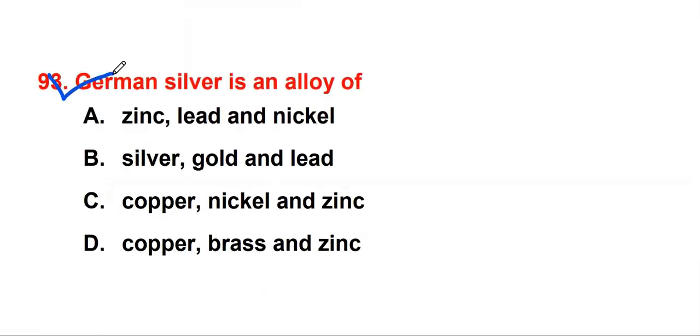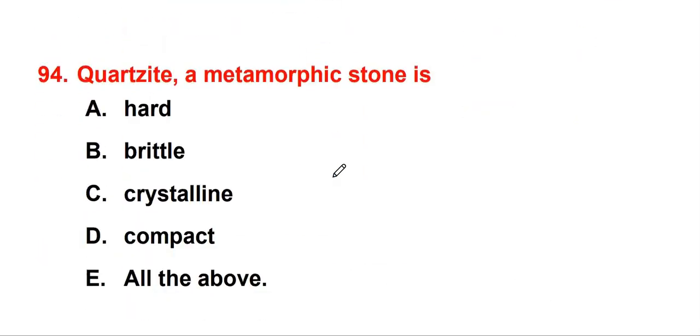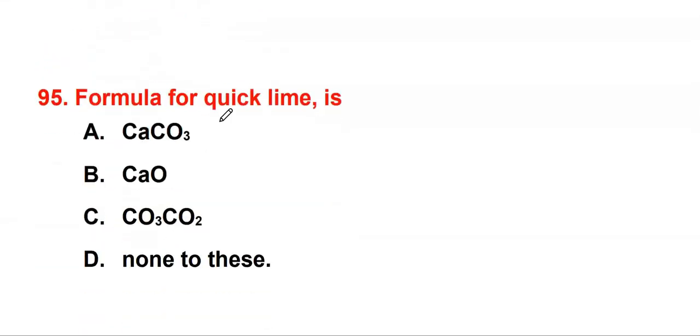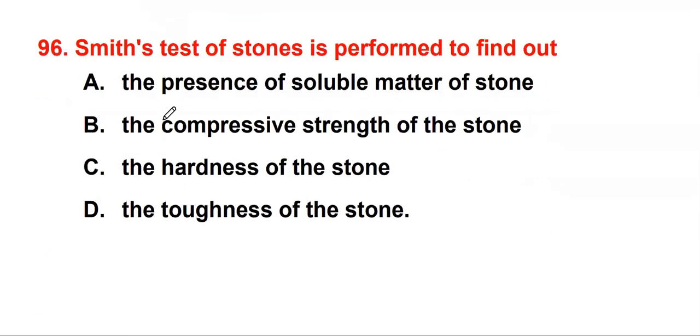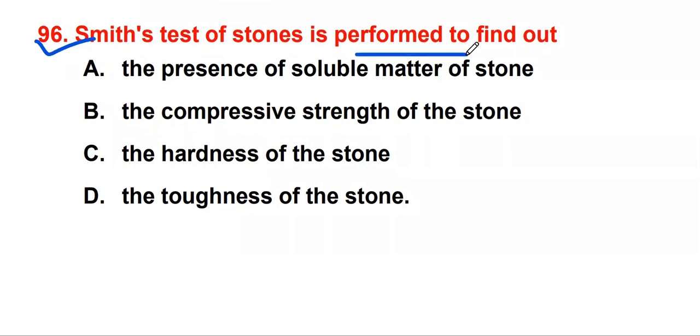The normal curing period for lime mortar is 7 days. German silver is an alloy of copper, nickel, and zinc. It sounds like CNG, right? So you can remember like CNG, but here is Z. Colesite is metamorphic stone - is hard, brittle, crystalline, and compact. So answer is all the above. Formula for quick lime is calcium oxide, CaO. Smith test of stones is performed to find out the presence of soluble matters of stone.